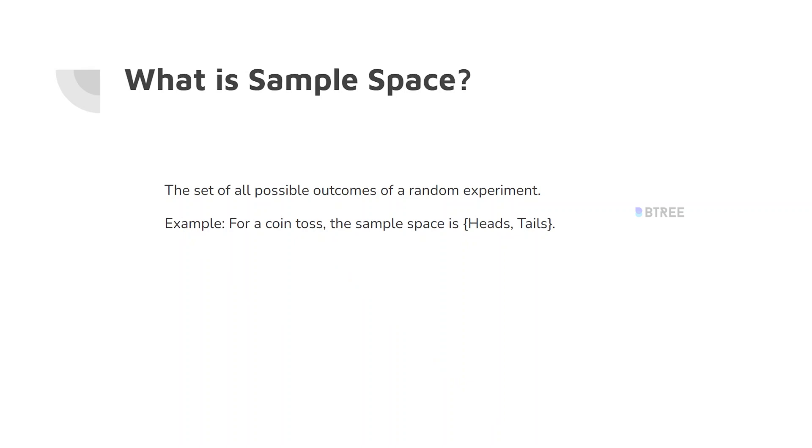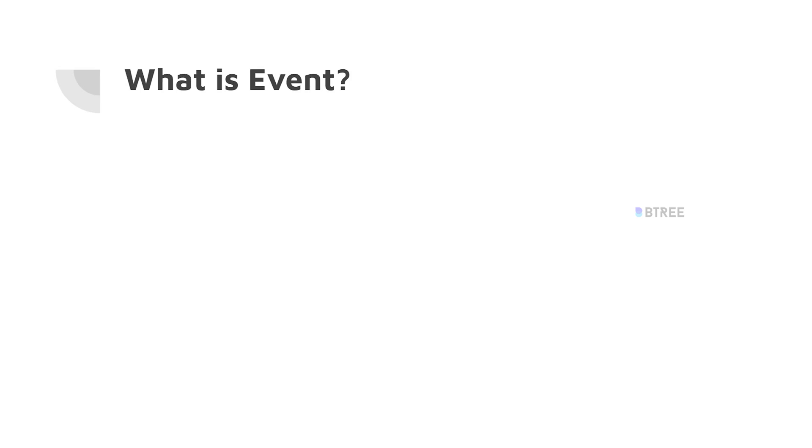For a coin toss, we have head or tails, so those two are the sample space. Now, how do we see the event? If I roll the dice, I have six outcomes — that's the sample space. If I roll the dice and I get 2, that specific outcome is the event. The event is a subset of the sample space.